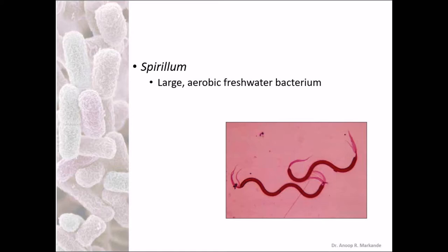Spirillum — we have discussed about Spirillum in the major types of bacteria. As can be seen in this image, they are spiral organisms. They are extremely large — known to be 0.5 to 500 micrometers in length — while normal bacteria like E. coli is known to be 0.5 to 1 micrometer in length. These are extremely large aerobic freshwater bacteria.